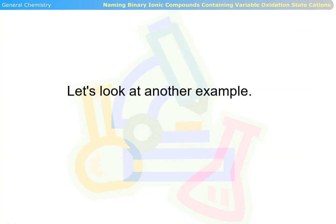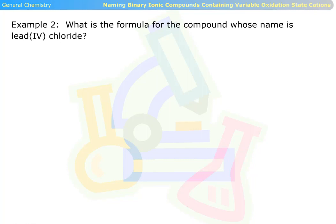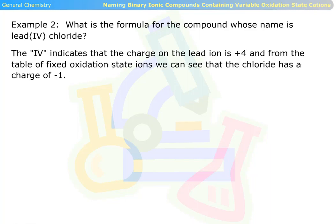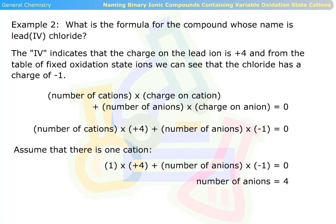Let's look at another example. Example two. What is the formula for the compound whose name is lead(IV) chloride? The IV indicates that the charge on the lead ion is positive four, and from the table of fixed oxidation state ions, we see that the chloride has a charge of negative one. Assume that there is one cation. One times positive four plus the number of anions times negative one equals zero. So the number of anions equals four. The formula for this compound is PbCl4.